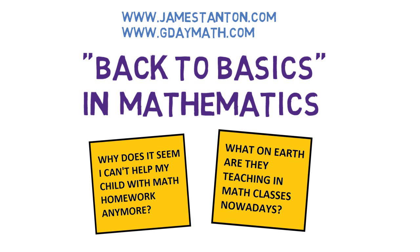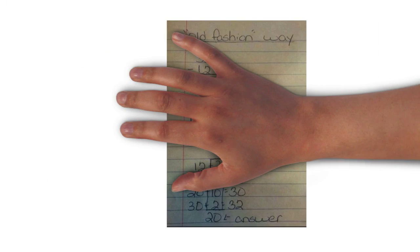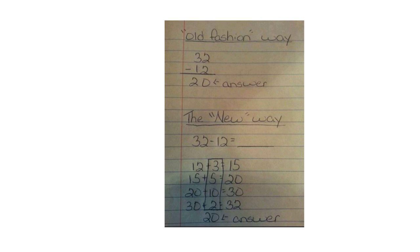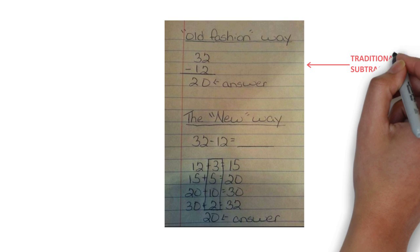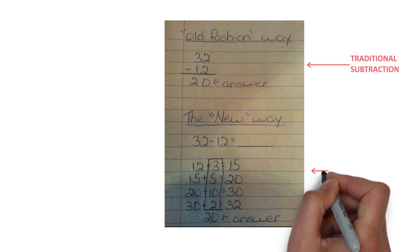The exemplar of absurdity making the internet rounds is this example, showing how to compute 32 take away 12 the old-fashioned way, and how to compute it the new way.